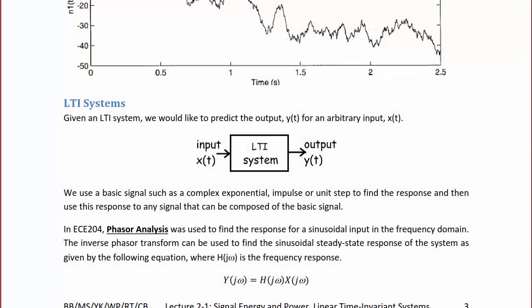LTI systems: given an LTI system we would like to predict the output y(t) for an arbitrary input x(t). We use a basic signal such as a complex exponential, an impulse, or a unit step to find the response, and then use this response for any signal that can be decomposed into that basic signal. If b_i(t) is our basic signal, then x(t) can be rewritten as a linear combination: x(t) = Σ_i α_i b_i(t). Since we know how the system responds to b_i(t), we know how y(t) responds for a linear time invariant system.